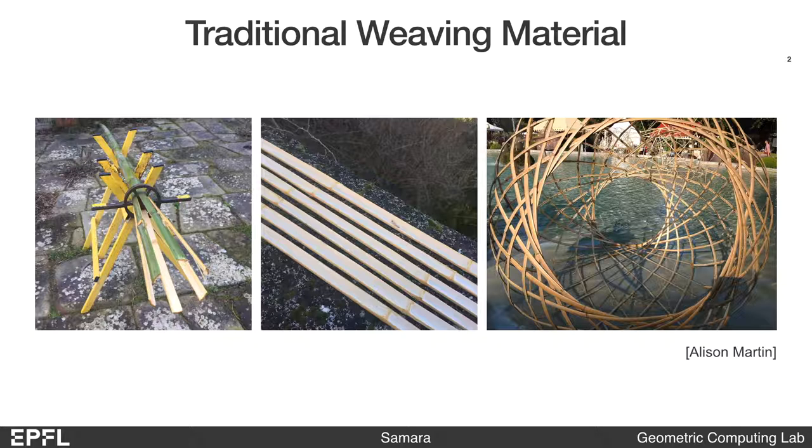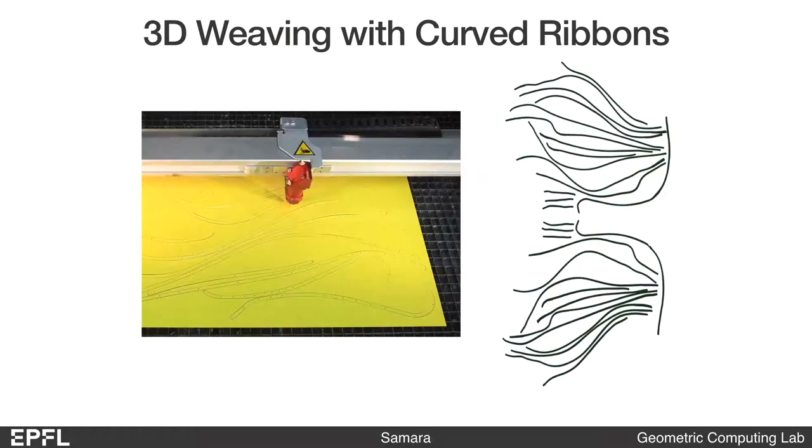These materials can be easily cut into straight ribbons that align with the material's fiber directions. However, with modern fabrication technology such as laser cutting, we can fabricate ribbons of arbitrary shape.